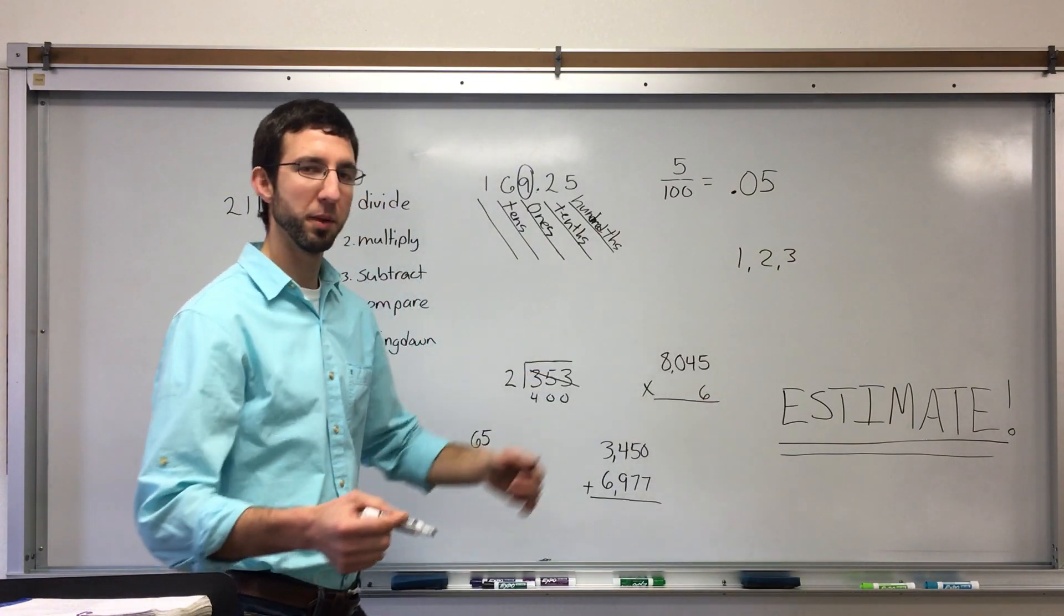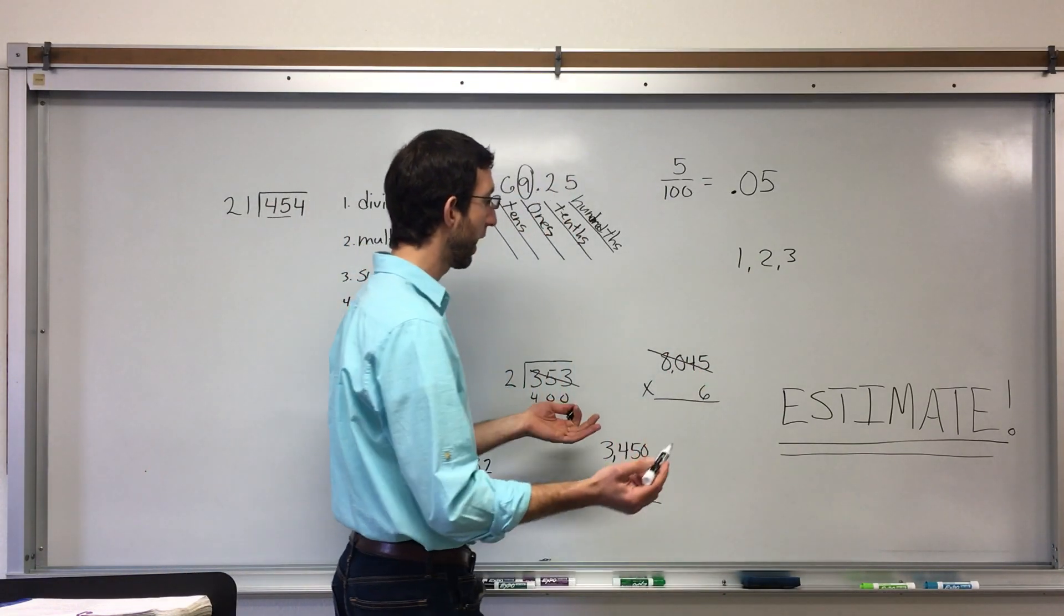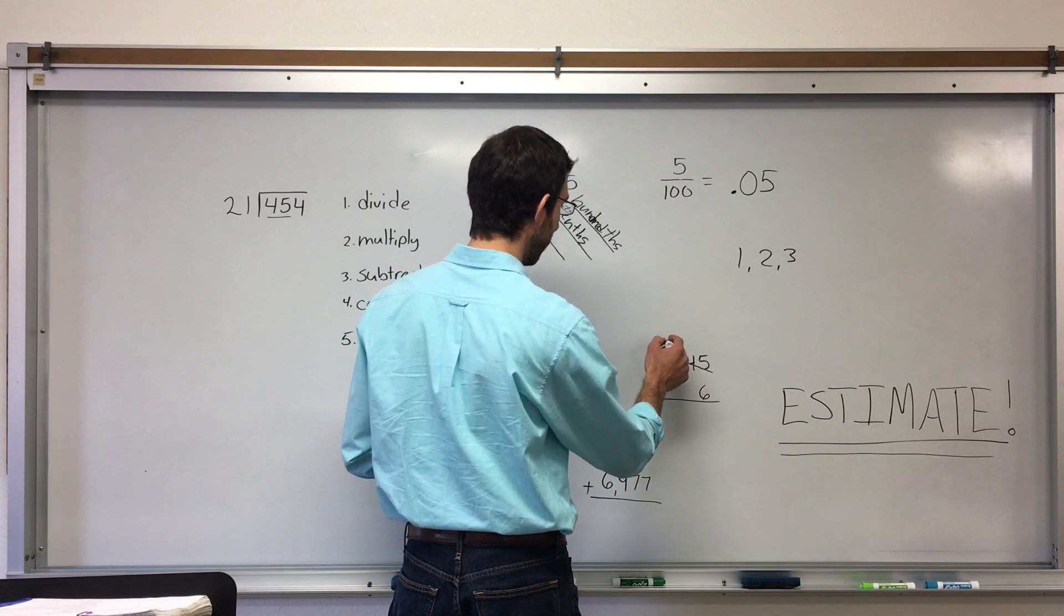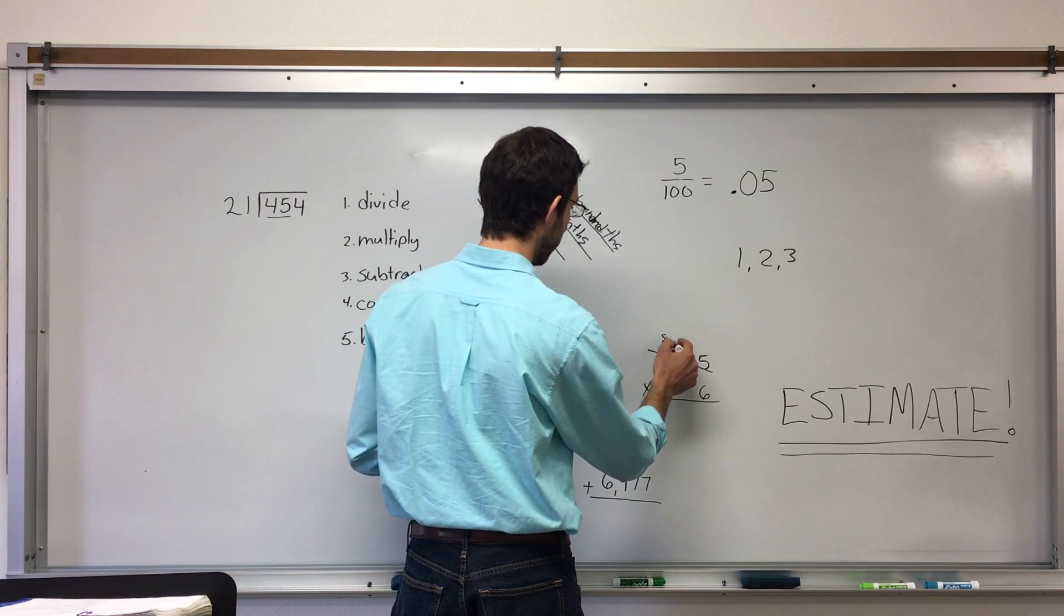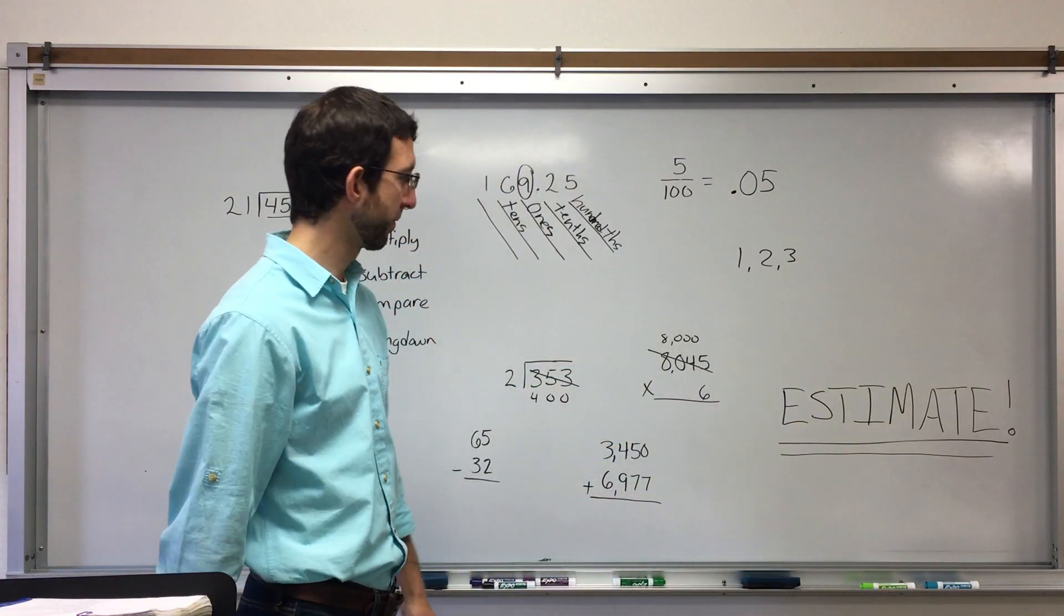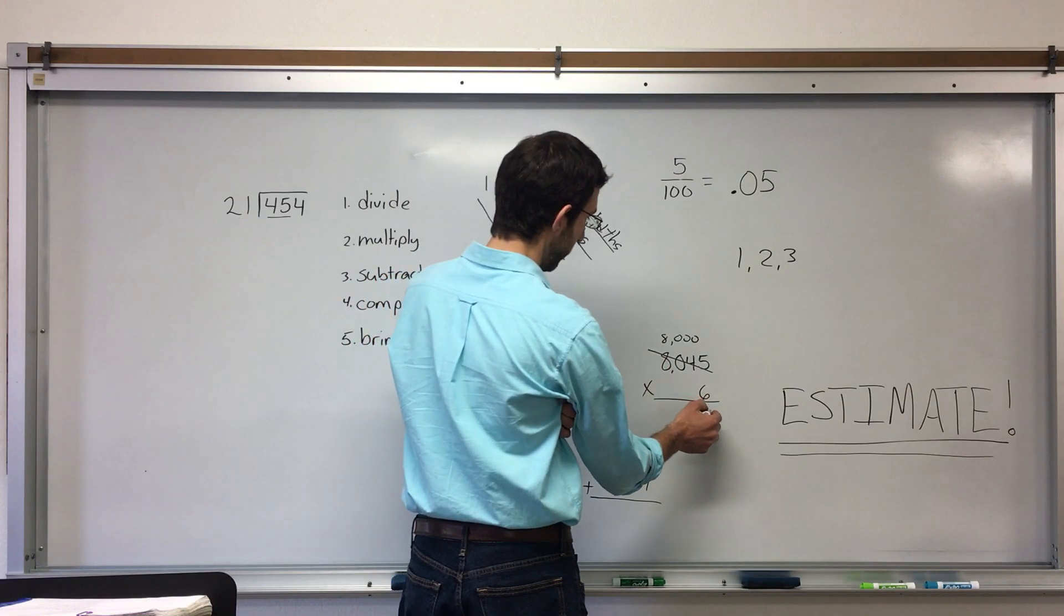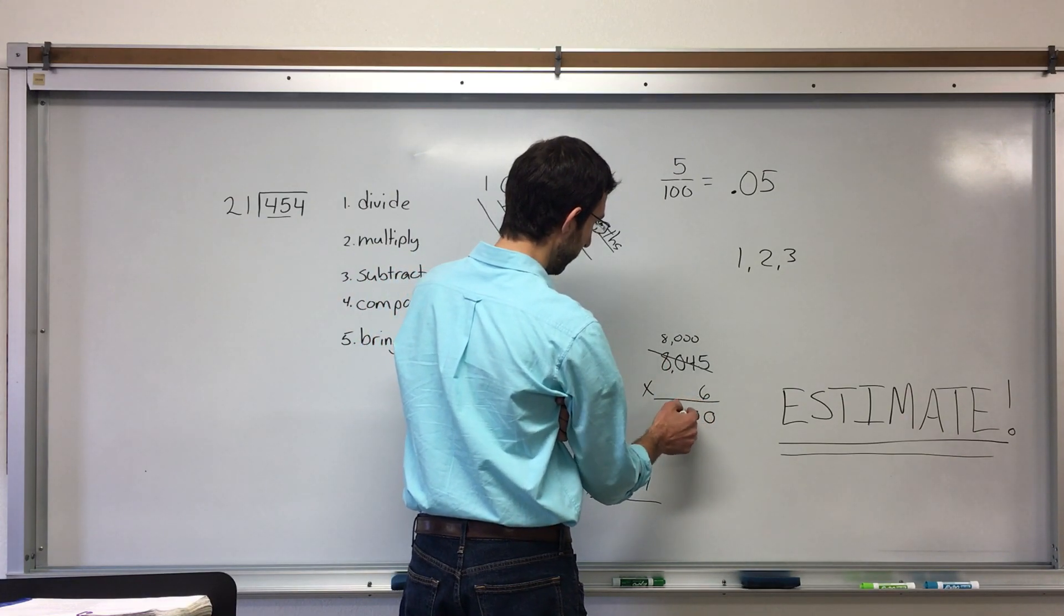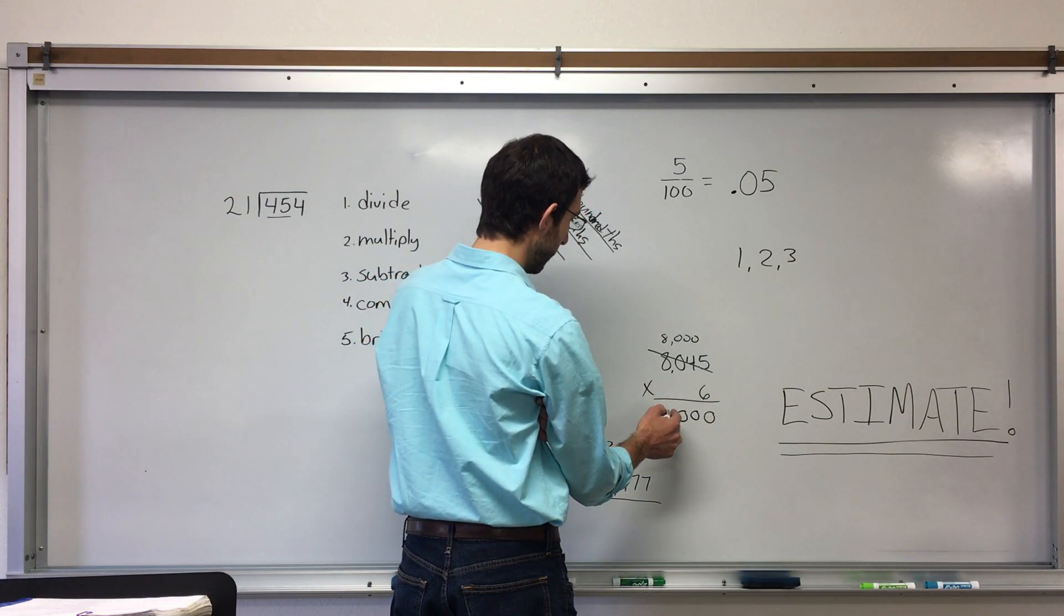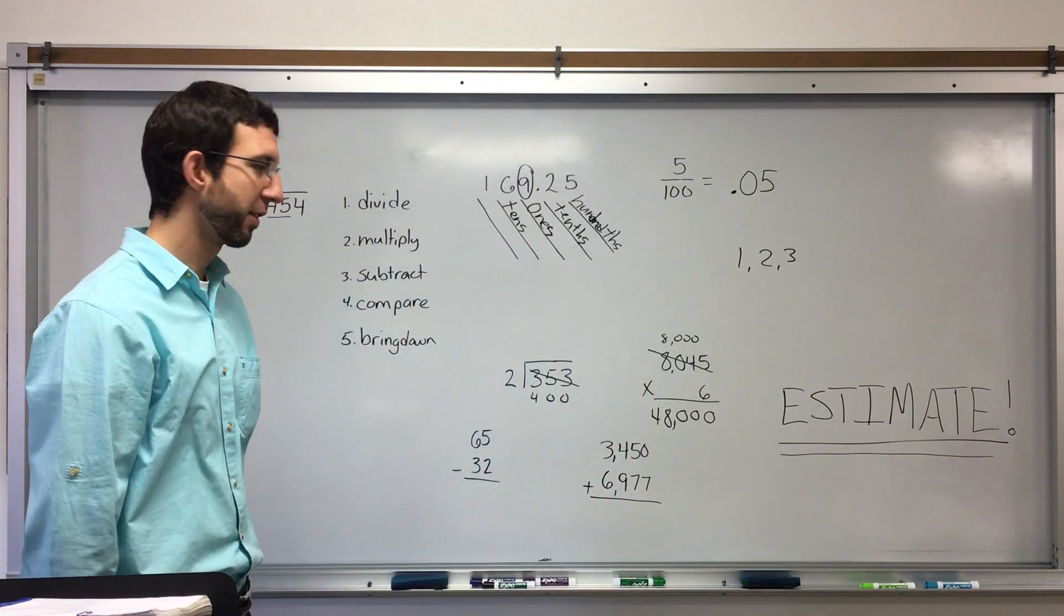When it's a multiplication problem, you estimate, you round the multiplicand to the largest place value. Which, in this case, would be 8,000. And then multiply. Now, that's pretty easy. All you do is three zeros, and then multiply 8 times 6. Isn't that so much easier?